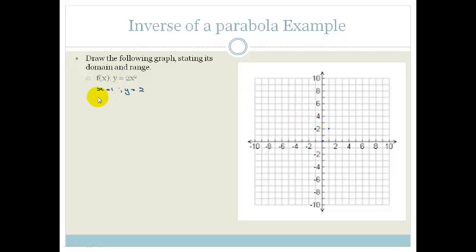When x is 2, y equals 2 times 2 squared, which is going to be 8. So when x is 2, y is 8. And when x is 2, y is 8. So this is actually a very steep parabola. And I apologize for my bad drawing.